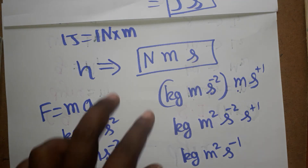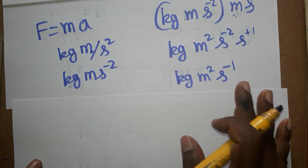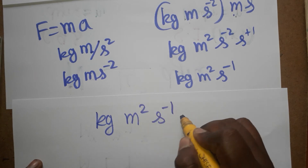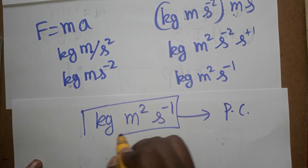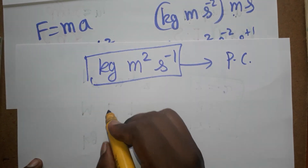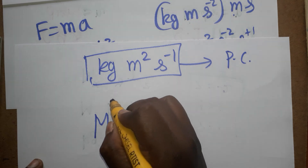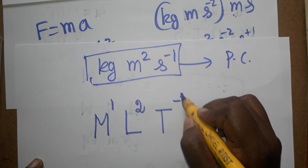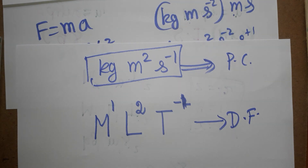Now for the dimensional formula: mass is represented as M, length as L, and time as T. From kg·m²·s⁻¹, we get the dimensional formula M¹L²T⁻¹. This is the final SI unit and dimensional formula for Planck constant. Thank you for watching. If you like my channel, please subscribe.